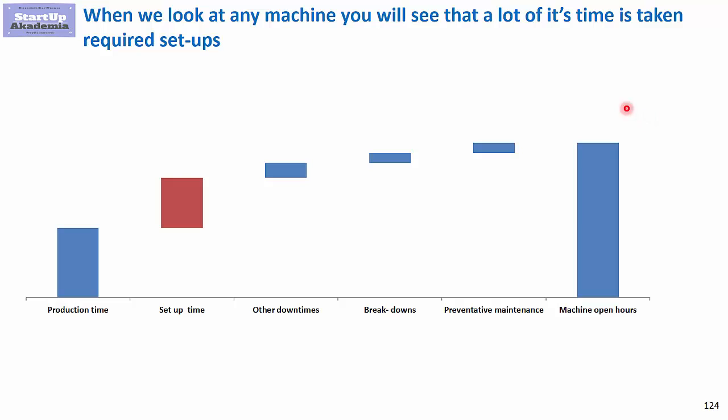Now when we look at the operational time of any machine or production line, you will notice that a lot is taken by preventive maintenance, breakdowns, and other downtimes. But actually the biggest one are setup times because they happen often and they are quite long in many cases. Therefore it makes a lot of sense to reduce the setup, both the number of setups and the time of the setups.